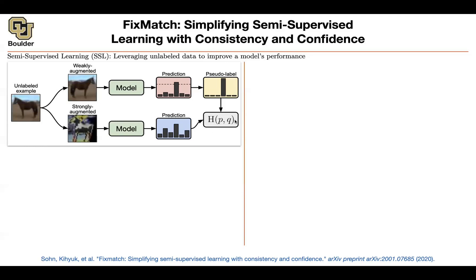In terms of notation, you have L number of classes, a batch of B labeled examples. Your labels are just one-hot labels. You have your unlabeled images or unlabeled examples—it's going to be mu times bigger, so mu is determining the relative size of labeled data and unlabeled data.